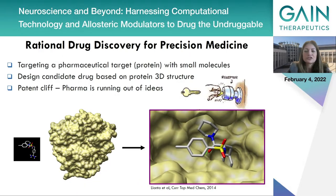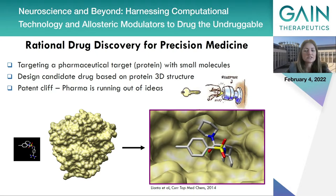Rational drug discovery is a cornerstone for precision medicine because, for example, by knowing the three-dimensional structure of a pharmaceutical target, which is usually a protein, we can now design molecules specifically designed for the target of interest. However, this strategy has so far targeted the active sites of enzymes, and as we progress through the years in pharmaceutical research, we find that this approach is not devoid of problems.